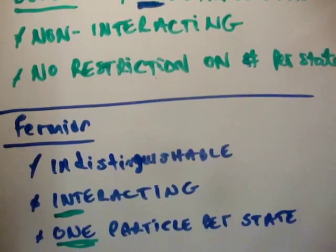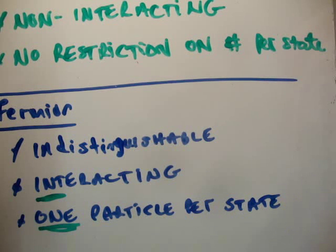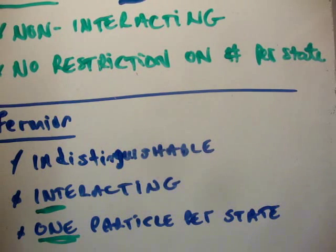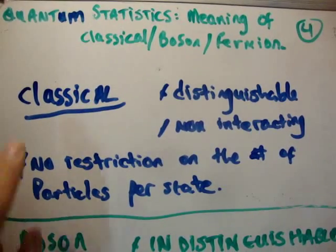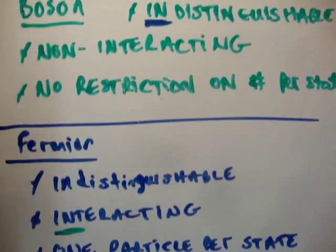Finally, fermions are indistinguishable particles, just like bosons, so that part of the multiplicity is lower than that of classical particles. However, they are interacting — versus non-interacting for bosons — and that leads to the property that you can only get one particle per state, whereas non-interacting particles have no restriction on particles per state. This property further reduces the multiplicity of fermions. So you would expect classical particles to have the largest multiplicity, bosons the second largest, and fermions the smallest.